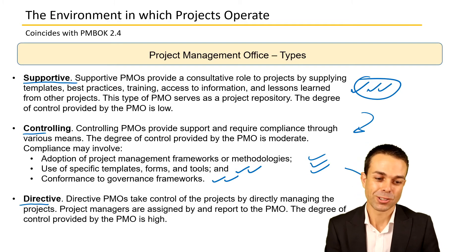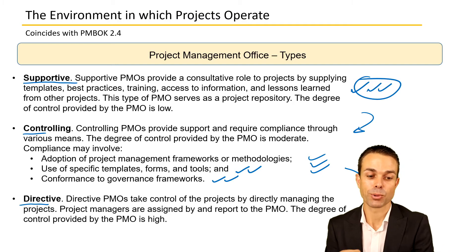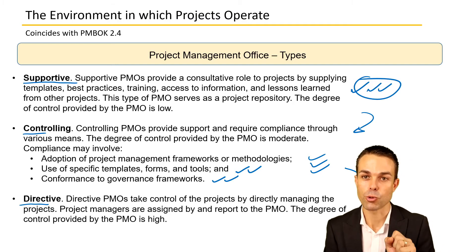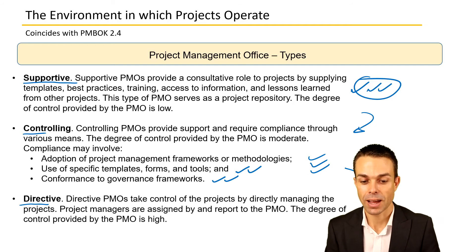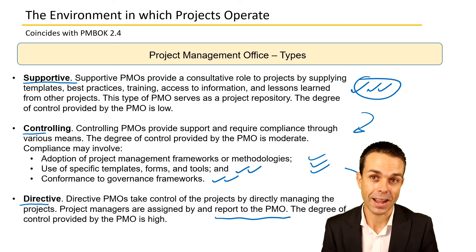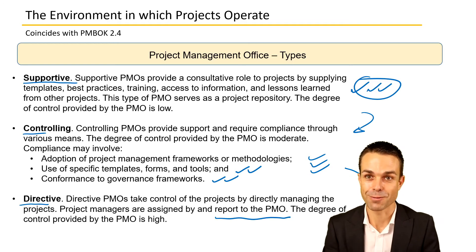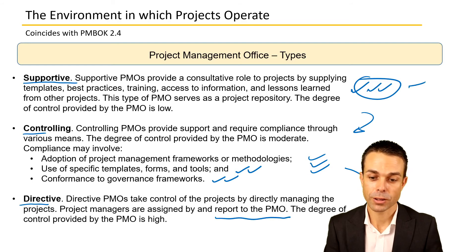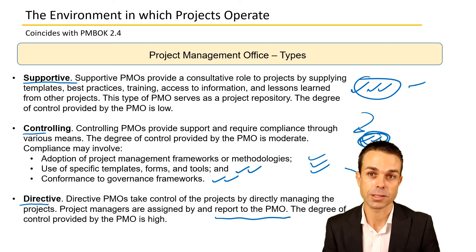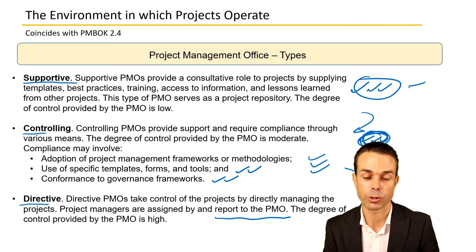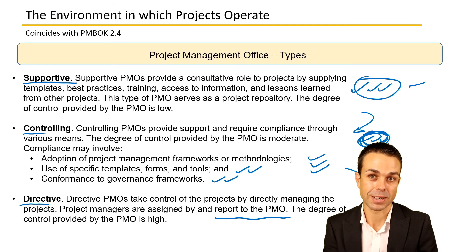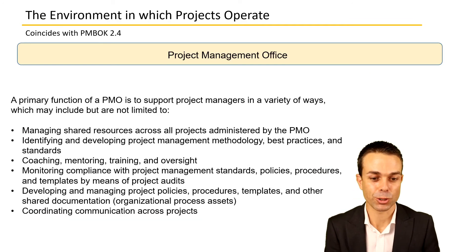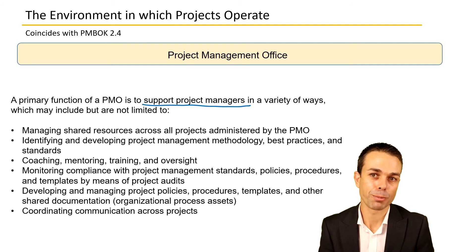The most controlling type is the directive PMO. Directive project management offices take complete control of the projects by directly managing them. They have specific project managers assigned by the PMO who report back to it, giving them a very high degree of control. So you have supportive, controlling — through templates and governance — and then directive, where the PMO takes the direction of the project itself.